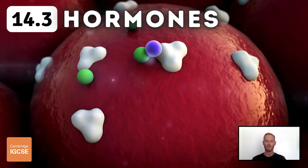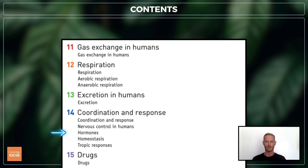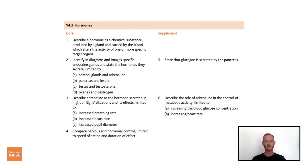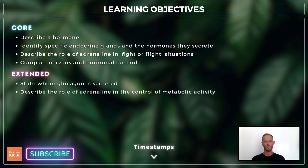Hello and welcome to another complete Cambridge IGCSE biology lesson, where you'll learn absolutely everything you need to know on topic 14.3, hormones. We'll be following the Cambridge syllabus exactly. For topic 14.3, you need to know about hormones and the glands that secrete them, the effects of the hormone adrenaline, and the differences between nervous and hormonal control. For extended, you also need to know where glucagon is secreted and describe the role of adrenaline in the control of metabolic activity.